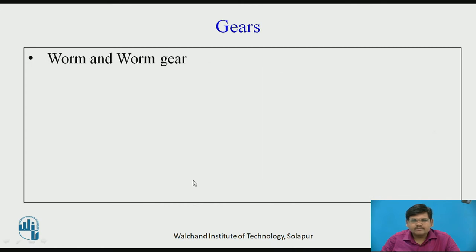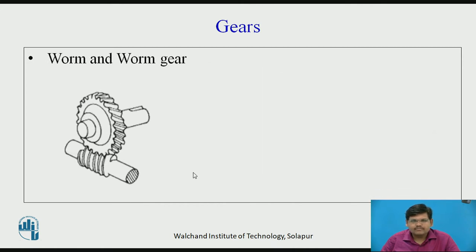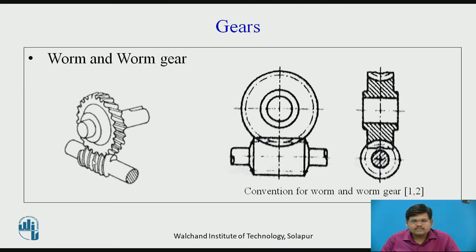Let us move to the next gear: worm and worm wheel. This type of gear is used when you want to transfer high loads at relatively lower speed. The worm is similar to a screw with threads made over it, and this is the worm gear, which may be a spiral gear or a spur gear. Its conventional representation shows the worm and the worm gear with its cross-sectional view.